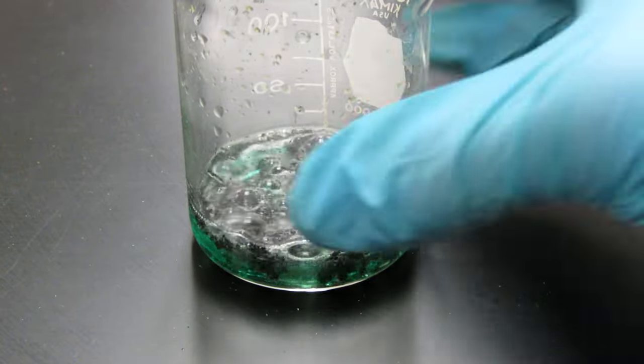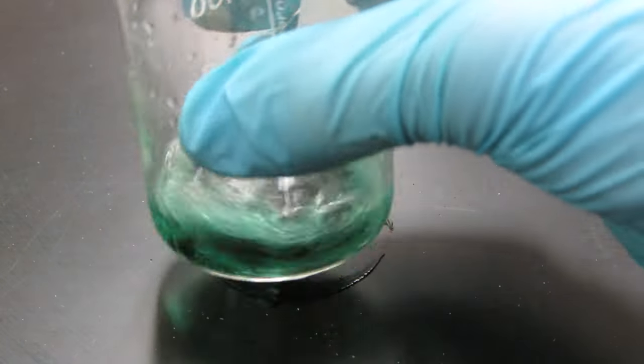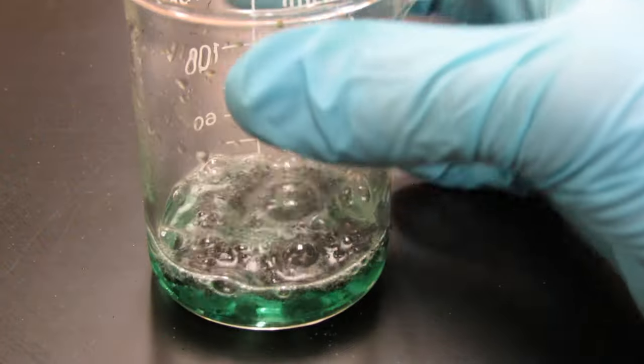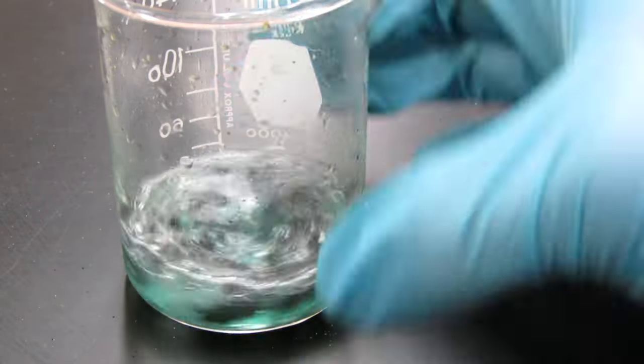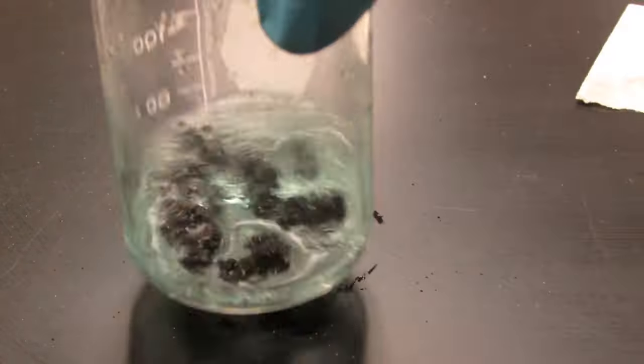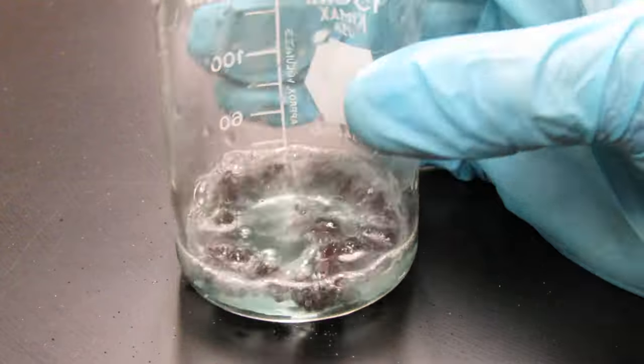What's happening is the zinc is more active, so it's taking the place of the copper metal and forming zinc chloride. As you can see, the copper chloride color is going away and becoming clear.